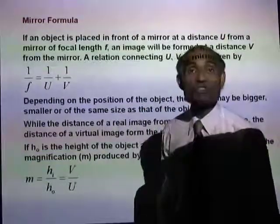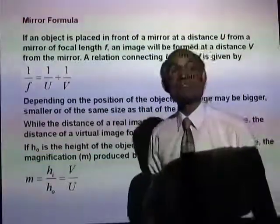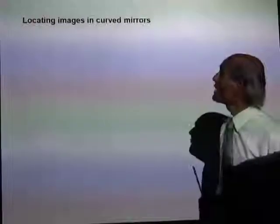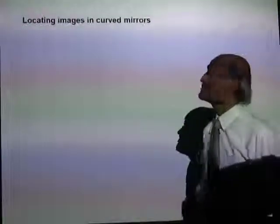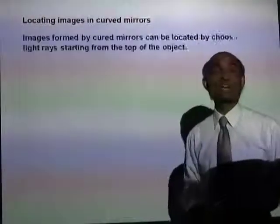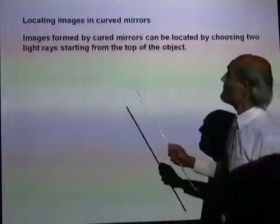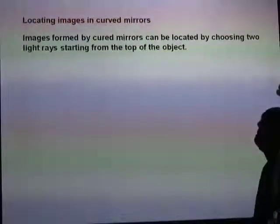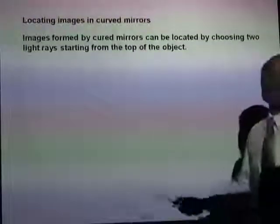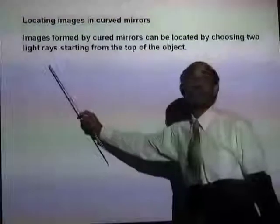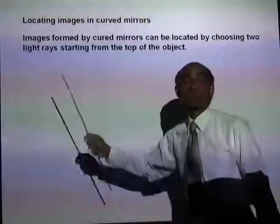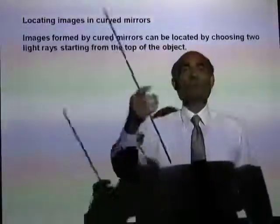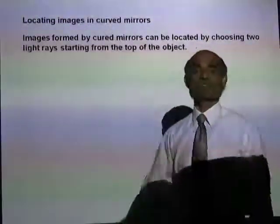Magnification is a relevant quantity. Let's see how we can locate images in curved mirrors. Images formed by curved mirrors can be located by choosing two appropriate light rays starting from one of the points on the object.